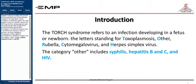For example, the TORCH syndrome refers to an infection developing in a fetus or newborn. The letters stand for Toxoplasmosis, Other, Rubella, Cytomegalovirus, and Herpes Simplex Virus. The category 'Other' includes syphilis, hepatitis B and C, and HIV.